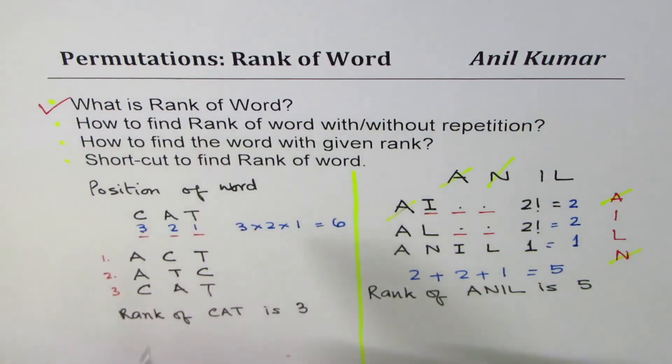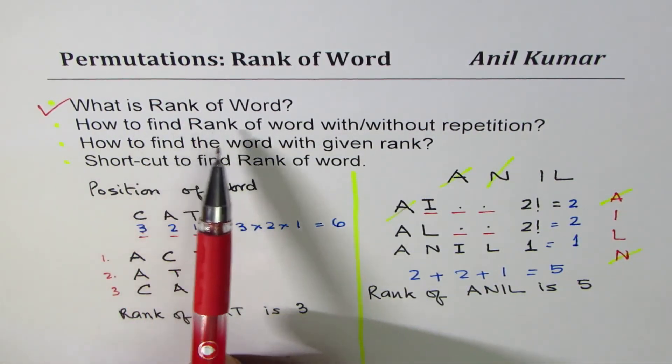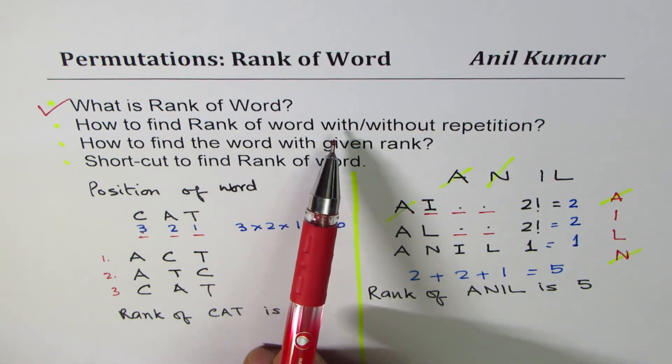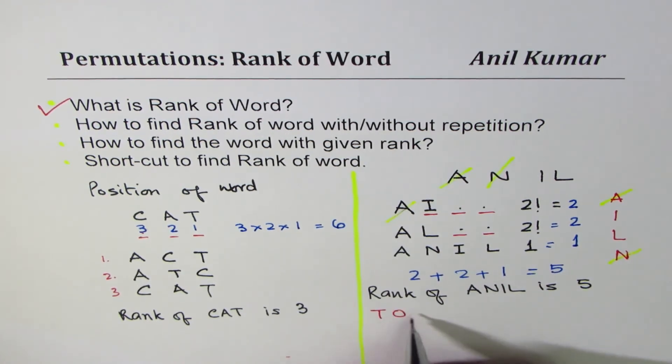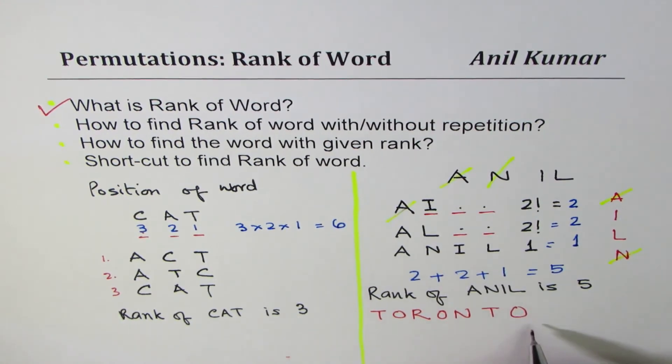I hope you are getting to understand what it is. So basically we have touched upon what is rank of the word and how to find rank of word with or without repetition. So we'll take a few more words in the following videos. So I'll take a word like TORONTO. Well that becomes complicated, there are repetitions. So we will see how to find rank of such words in coming videos.